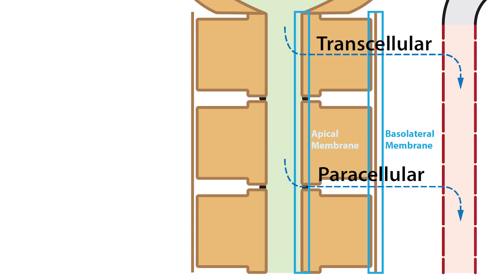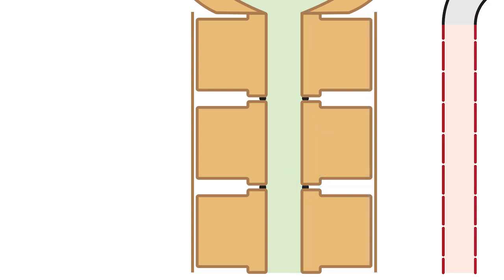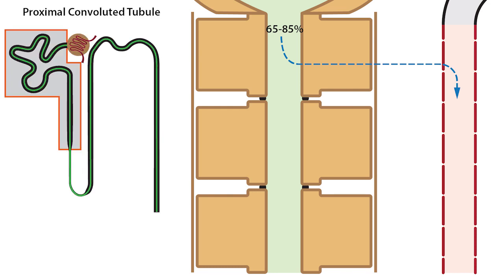Movement across the membrane involves transporters and channels located in both the apical and basolateral membranes. For example, 65-85% of sodium in the ultrafiltrate is reabsorbed along the proximal tubule via apical sodium-dependent cotransporters like the sodium-glucose cotransporters and the sodium-hydrogen exchanger.